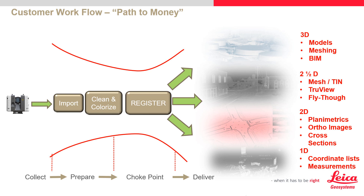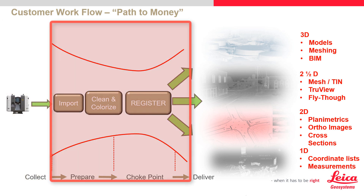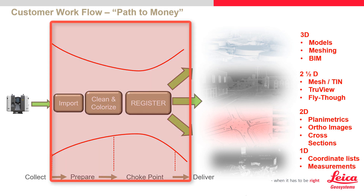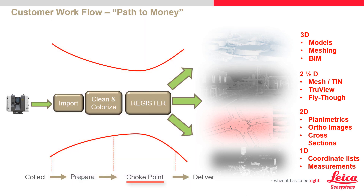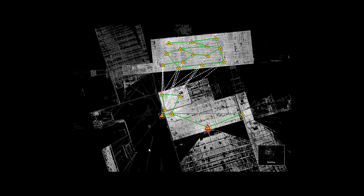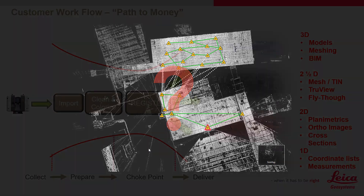In a traditional workflow, we have three major parts of the full workflow: field, data preparation, and then deliverable creation. The data preparation phase has always been a choke point where the flow from field to CAD slows down the most. This is compounded when the person registering the data is not the same person that collected the data. In many cases, it can take up to two to three minutes or more to stitch scans together where overlapping features are not easily identifiable.